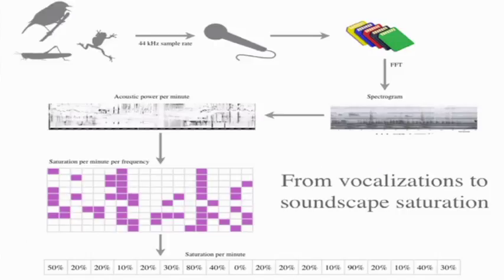So this is a summary of how we get from the rainforest to soundscape saturation: we record it, make spectrograms, compact the data to one-minute one-frequency-bin units, and from that we get the saturation per minute.